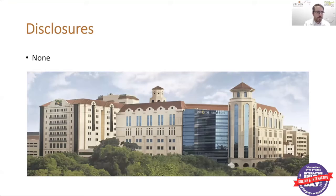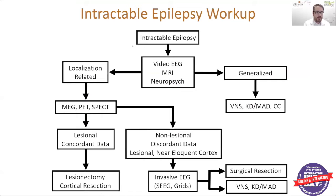To begin our talk, I'm going to start with a general flowchart to show a typical workup for intractable epilepsy. We define intractable epilepsy as any epilepsy where the patient has been treated with two or more medications that are adequately dosed and appropriately chosen for the patient-specific type of epilepsy, and yet they still continue to have seizures.